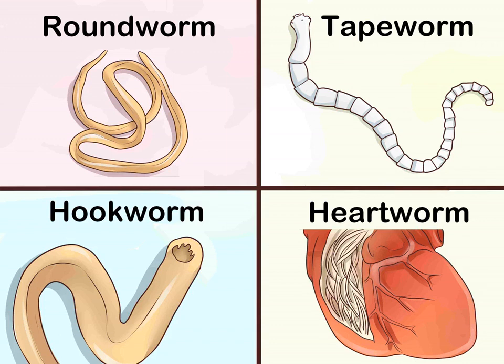How to identify different dog worms. There are many different types of worms that can infect dogs. Those of most concern are roundworms, tapeworms, heartworms, hookworms, and whipworms. Whilst each type of worm has a slightly different life cycle, the dog's symptoms can be consistent with different types of worm infections. Thus it is not possible to determine what sort of worm your dog has based on symptoms alone, and tests may be necessary. Knowing the general symptoms, risks, and characteristics of different types of worms can help you treat and care for your canine friend.